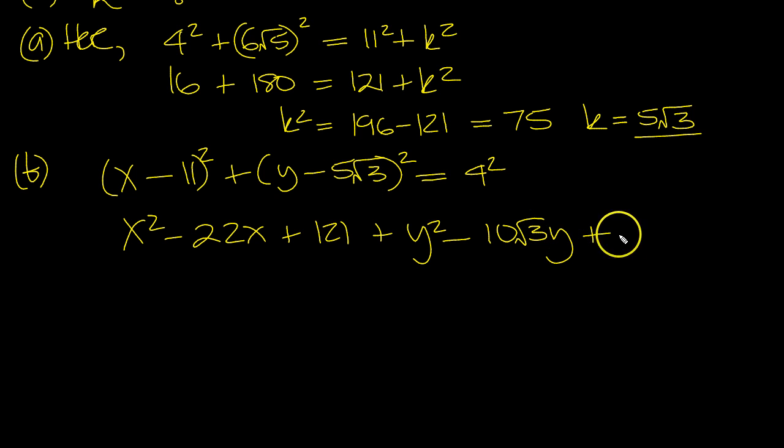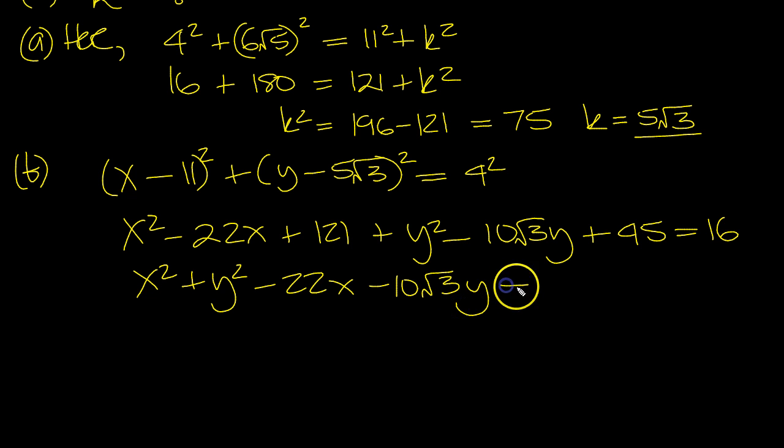That's the equation of the circle. Let's expand it. And then plus, 9 times 5 is 45. So you get x squared, plus y squared, minus 22x, minus 10 root 3y, is equal to.